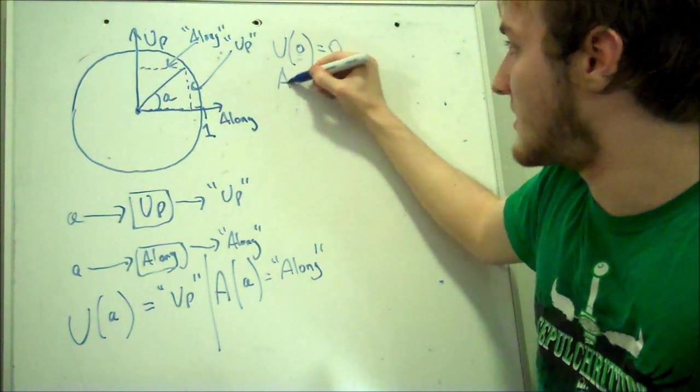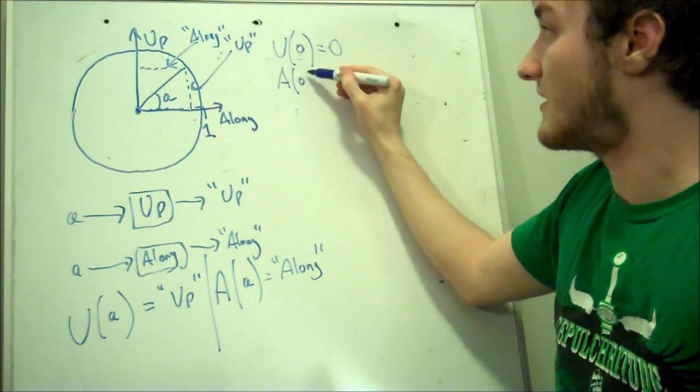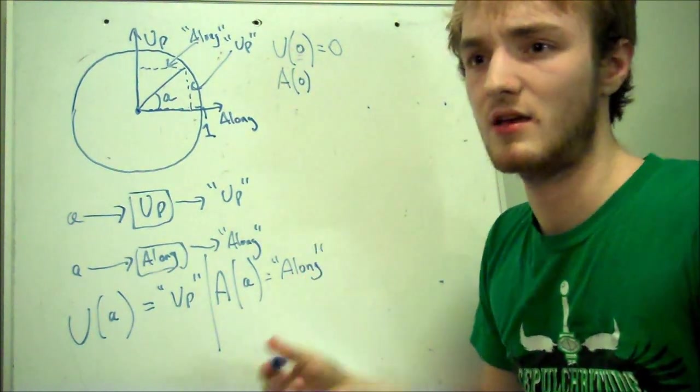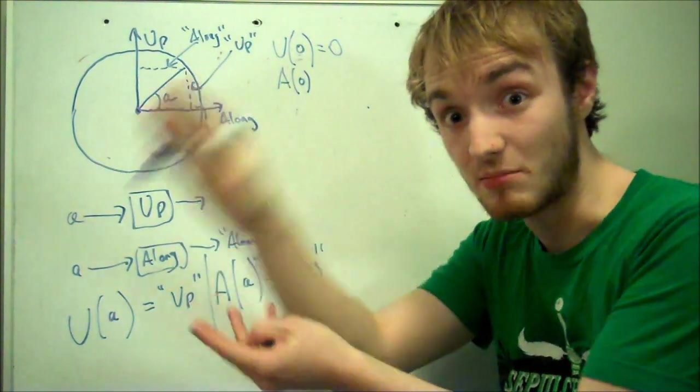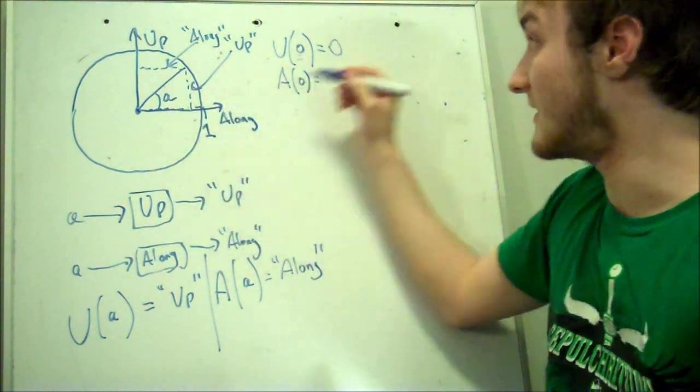If we say, I'm using the along machine, and I put in nothing, it's going to say one. Because if it's lying completely flat, and this line is length one, then it's going to be one in this direction.